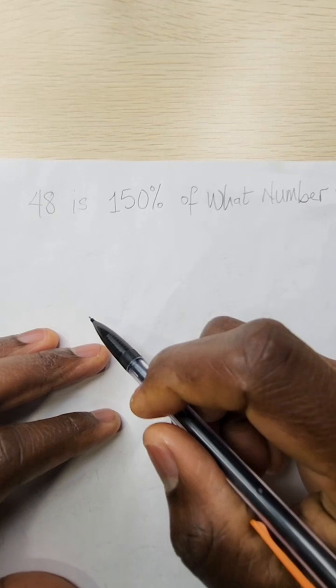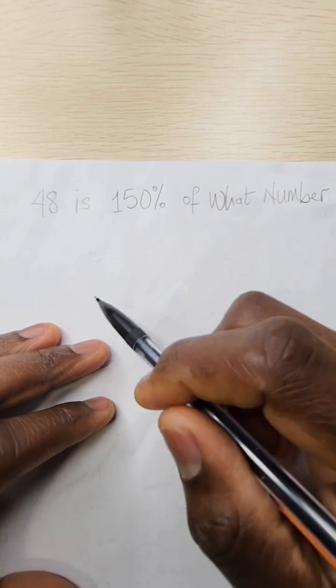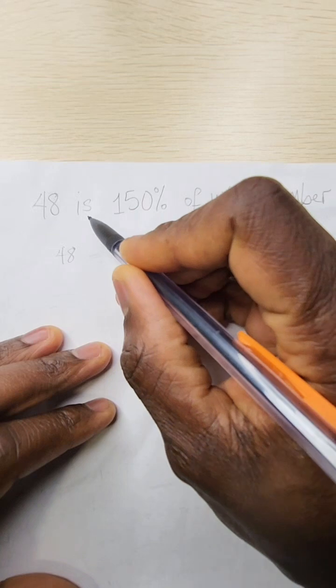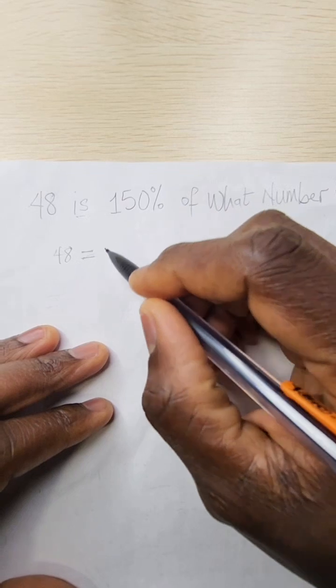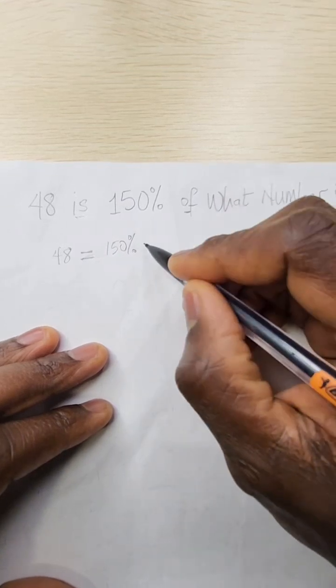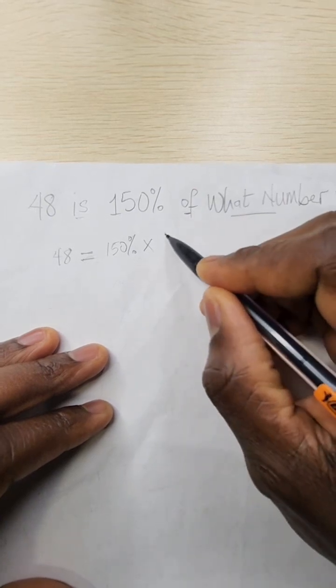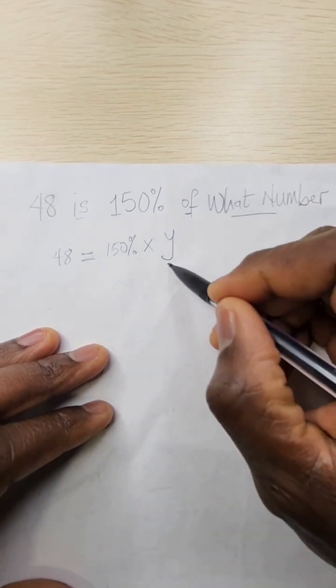So we just have to form an equation from these words. So we start. 48 is the same thing as equal to 150% of which is times what number? We represent that what number as y. That's the unknown. That's what we're looking for.